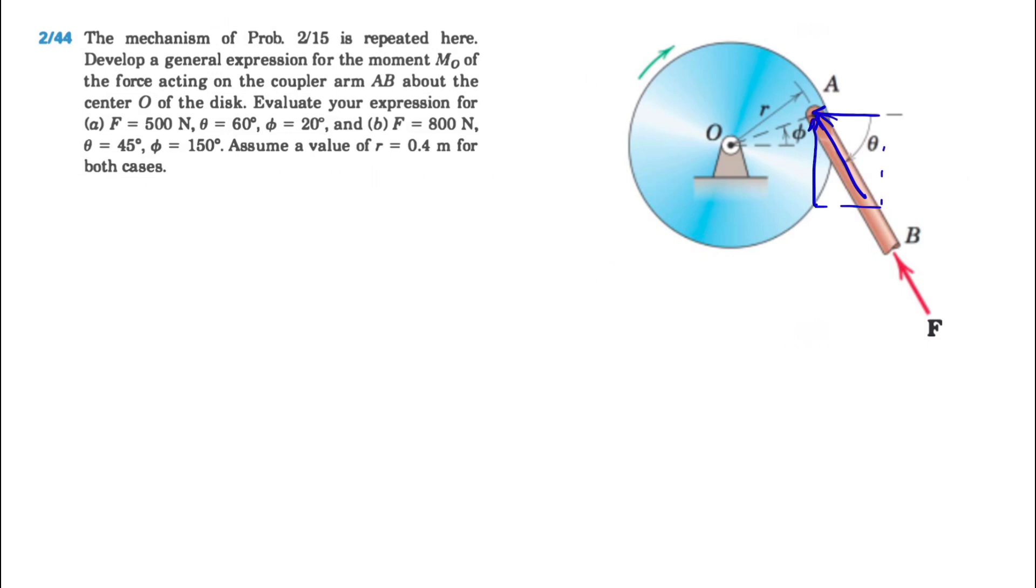So we know this angle here is theta, and the x component will be simply F times cosine of theta, and the other one, the vertical, would be F times sine of theta.